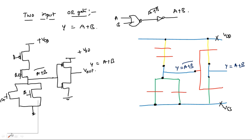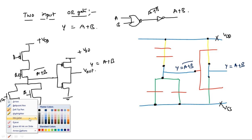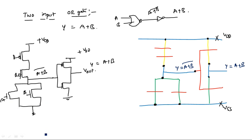This is the realization of a CMOS two-input NOR gate and OR gate with stick diagrams. You can label inputs A and B at the appropriate polysilicon lines. Thank you.